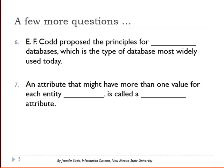An attribute that might have more than one value for each entity is called a what attribute?